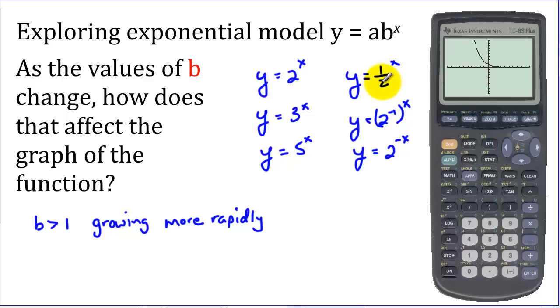instead of going from, if we go left to right from 0 and then rising rapidly here, we start out really big when x is a negative number and then we're flattening out. So when b is less than 1 but bigger than 0, we have what's called exponential decay.